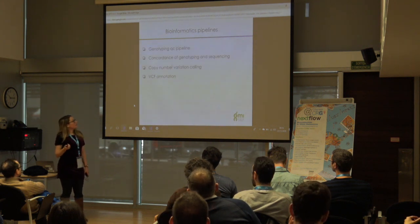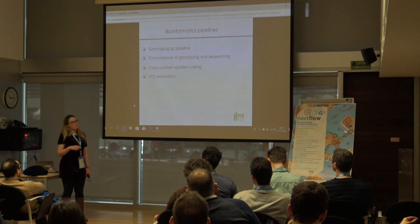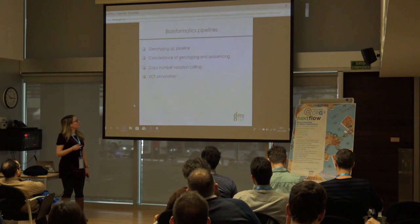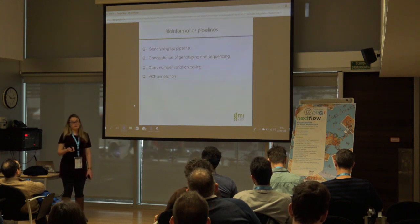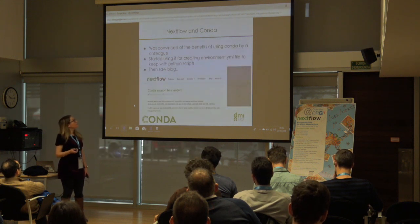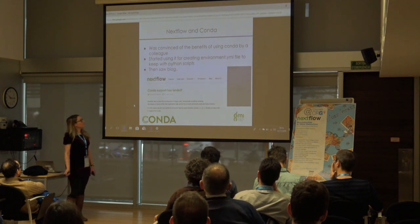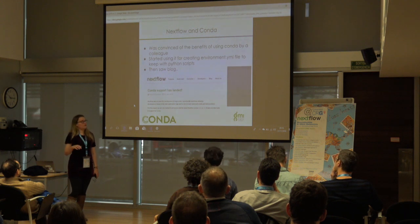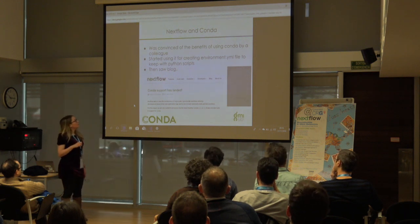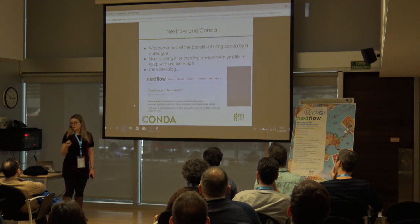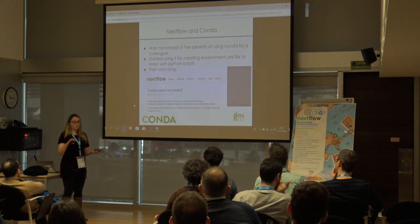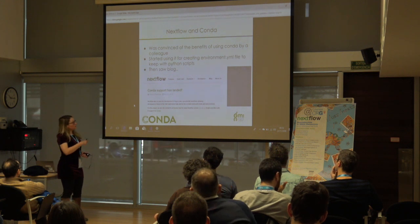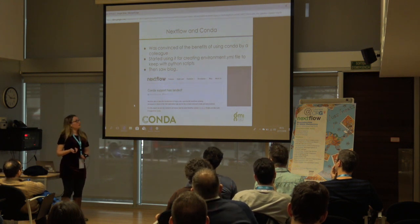The pipelines we have in Nextflow at the moment include: a genotyping QC pipeline written by David, a concordance pipeline for genotyping and sequencing, copy number variation calling, and a VCF annotation pipeline. I actually got into contact with Nextflow before using it — David tried to convince me, though I was strangely resistant at first. I started using it when writing Python scripts to keep the environment file with them, then saw the blog post on Conda and started trying it in Nextflow.